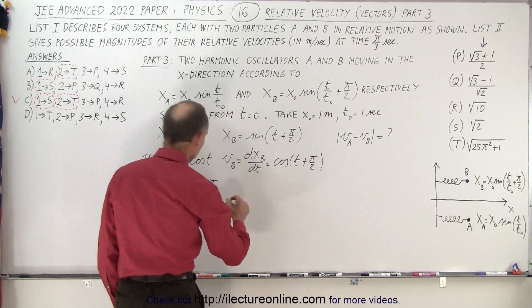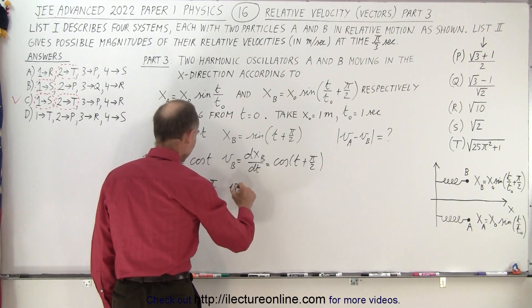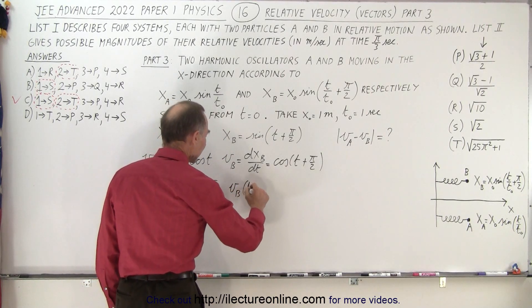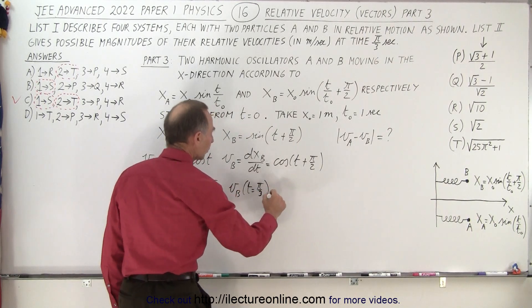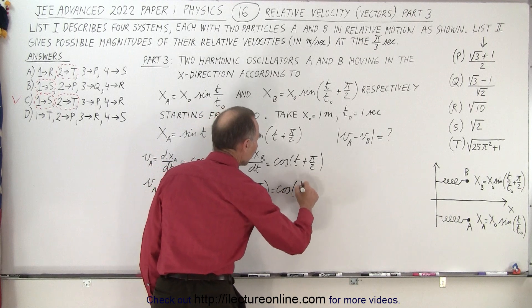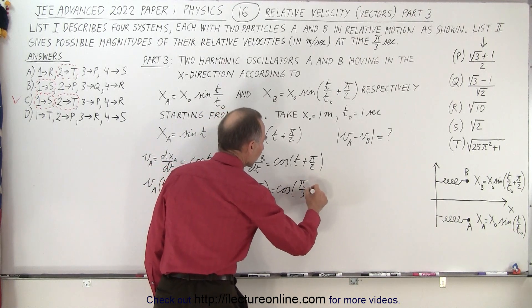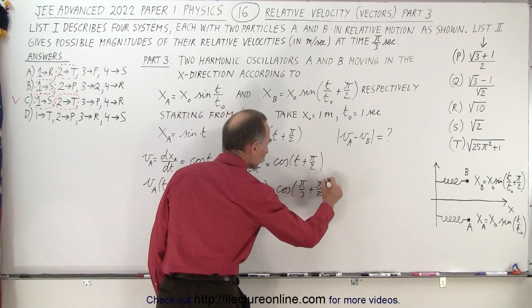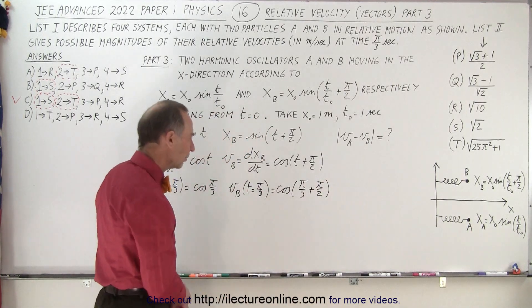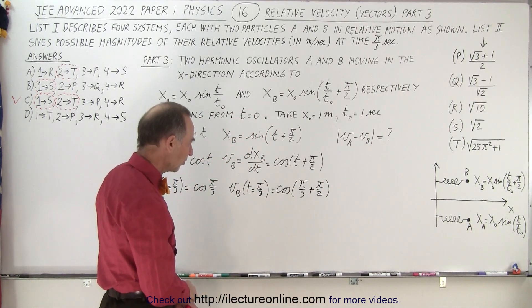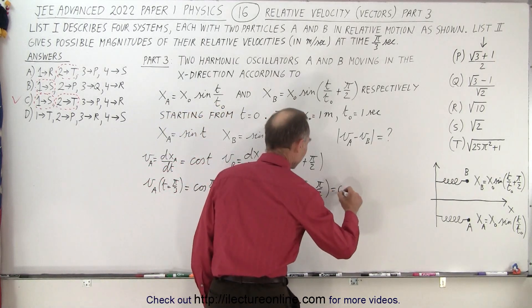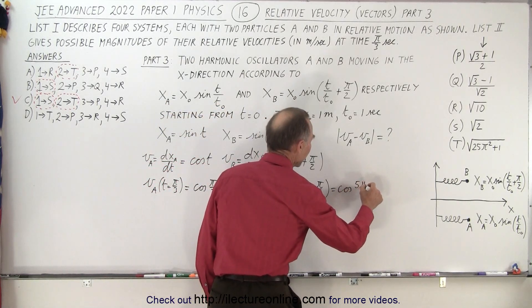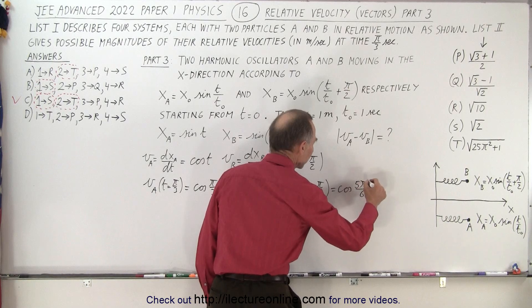Over here, we could say that v sub b, when time is equal to pi over three, that's equal to the cosine of pi over three plus pi over two. Well, we should combine those two. The common denominator is six, so we have two plus three, that would be five pi over six. So that's the cosine of five pi over six.